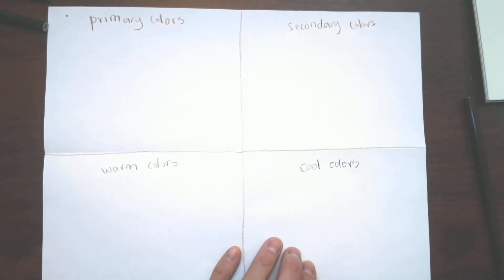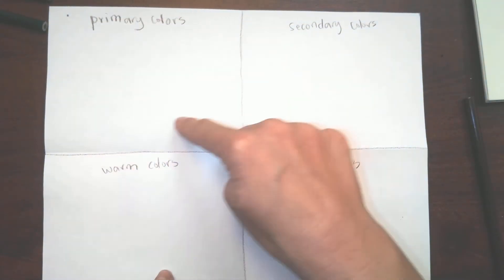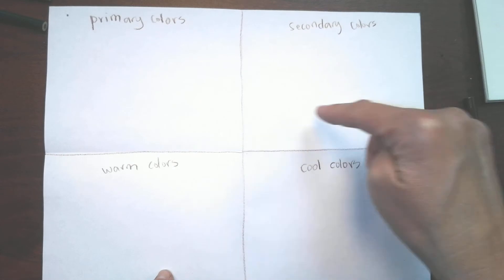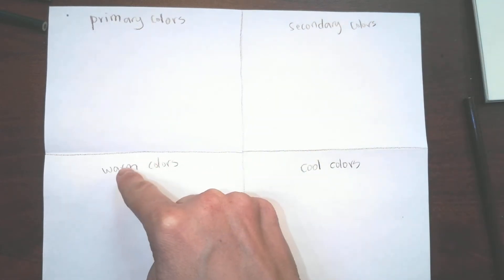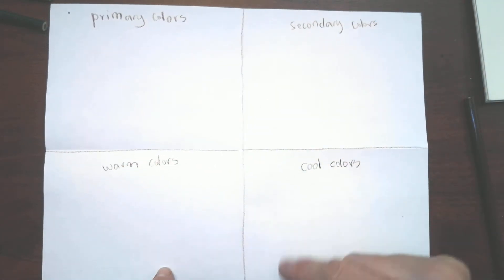When we're making our zentangles, we're only going to use primary colors in this square, secondary colors in this square, warm in this square, and cool in this square.